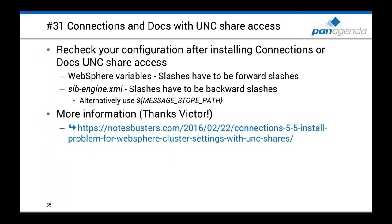Tip 31: Connection Docs with UNC paths. There is an issue with backslashes and forward slashes in configuration and installation scripts. After installing Connection Docs using UNC drives, check your WebSphere variables — paths must use forward slashes. However, in the Zip Engine XML file, paths must use backslashes. If not corrected, stores won't be saved to UNC paths — they'll be saved to local storage, which is problematic in a multi-node environment. Thanks to Victor who blogged about this.